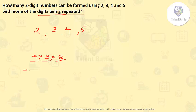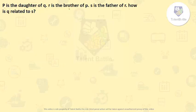So the answer will be 4 into 3 into 2 that is 24 ways. So P is daughter of Q, R is brother of P, S is father of R, how is Q related to S?